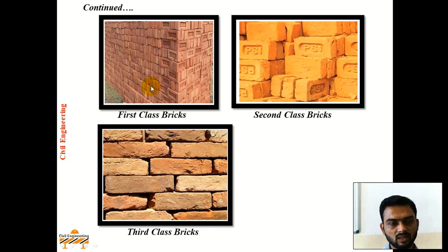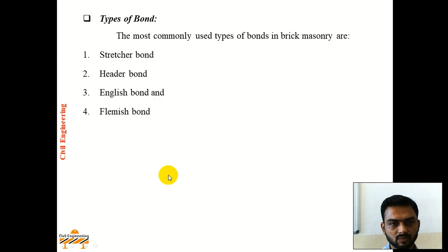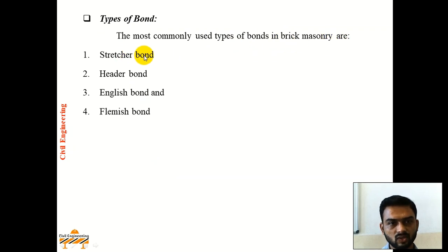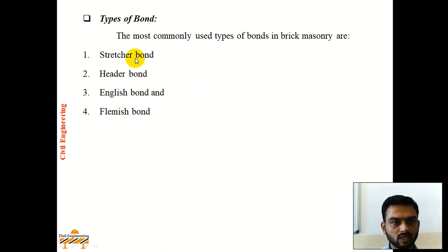In this picture you can see the 1st-class bricks, 2nd-class bricks, and 3rd-class bricks. The most commonly used types of bonds in brick masonry are stretcher bond, header bond, English bond, and Flemish bond. We will further see the description of each of these bonds.